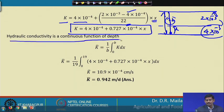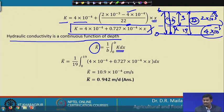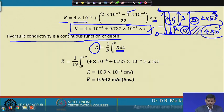The hydraulic conductivity is a continuous function of depth. The average K equals (1/B)∫₀ᴮ K dx. Here the water table is 3 meters below the surface and total depth is 22 meters, so B = 19 meters. Integrating from 0 to 19 and substituting the equation gives K̄ = 0.942×10⁻³.